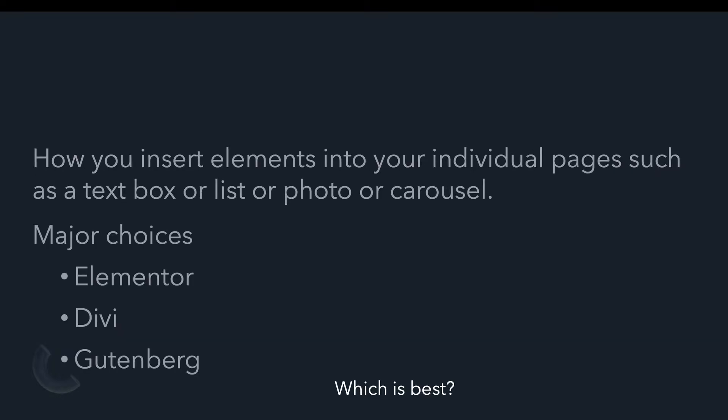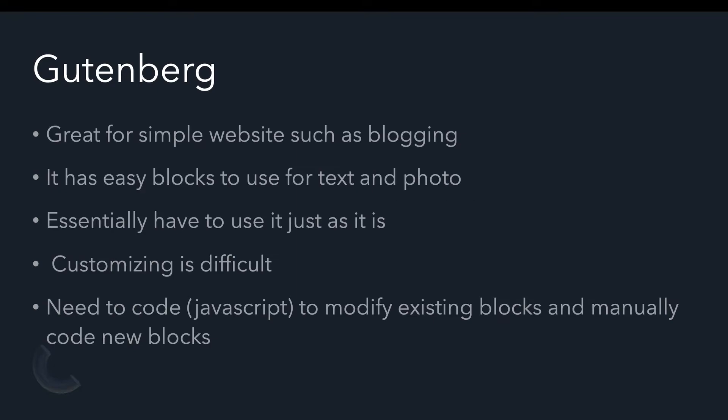There are a few different plugins you could use. The major choices are Elementor, Divi, and Gutenberg. Gutenberg is kind of the default on a lot of WordPress templates and it works — it's okay, and if you've never used anything else you might like it. But if you're going to be building more than one web page, I would really look at using either Elementor or Divi. Which one is best? It depends — let's talk about them.